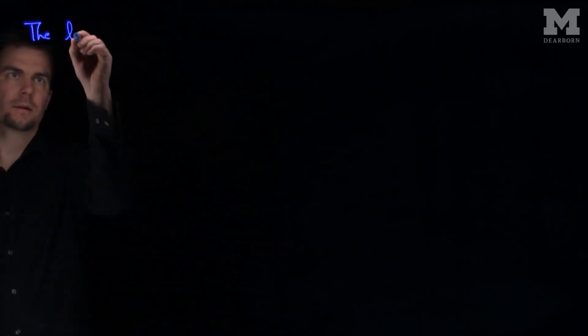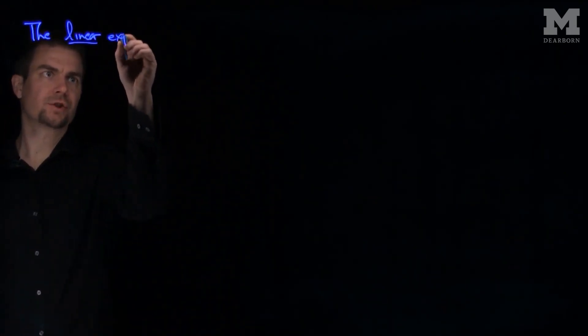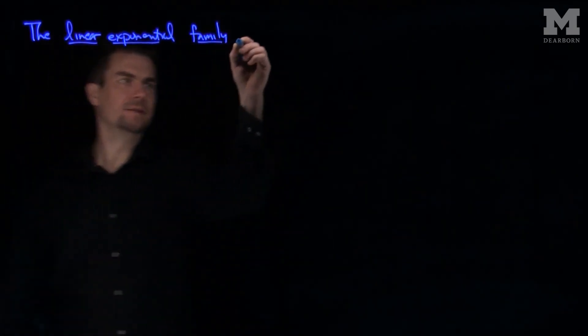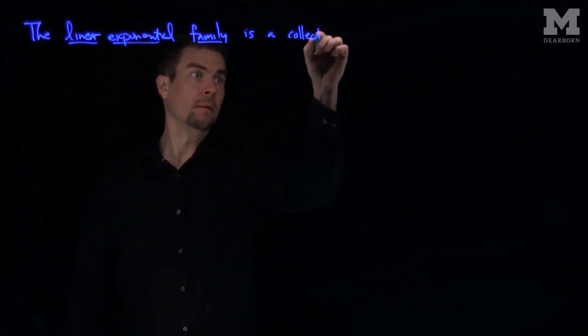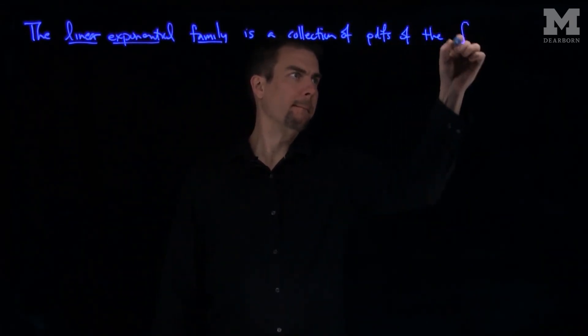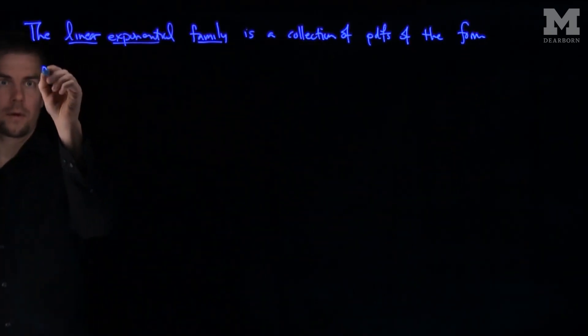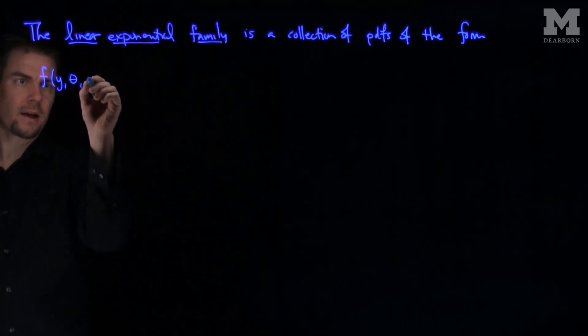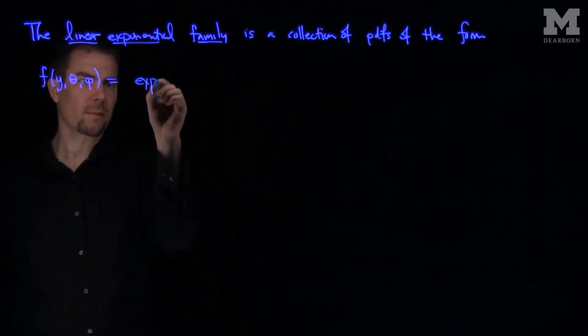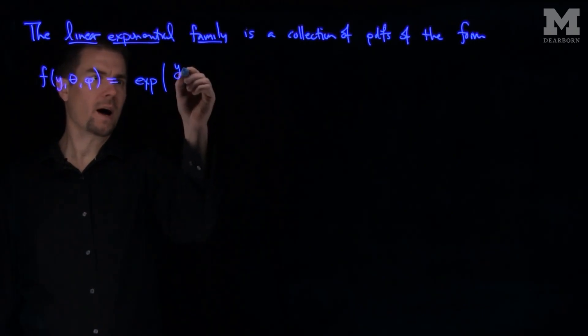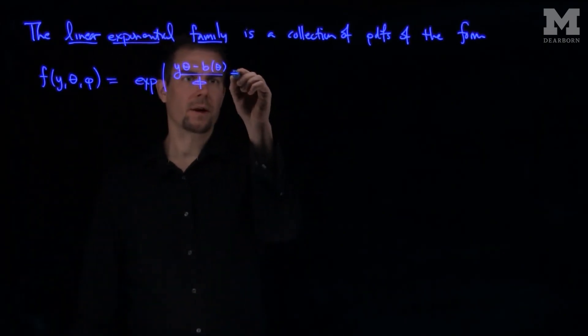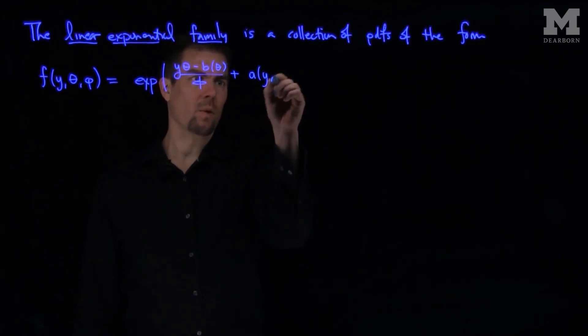The Linear Exponential Family is a collection of PDFs of the form f(y, θ, φ) = exp((yθ - b(θ))/φ + a(y,φ)), where θ and φ are parameters.